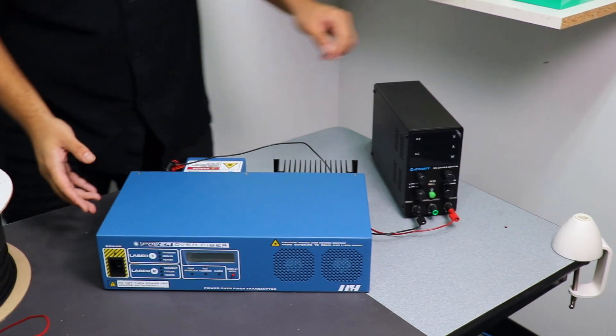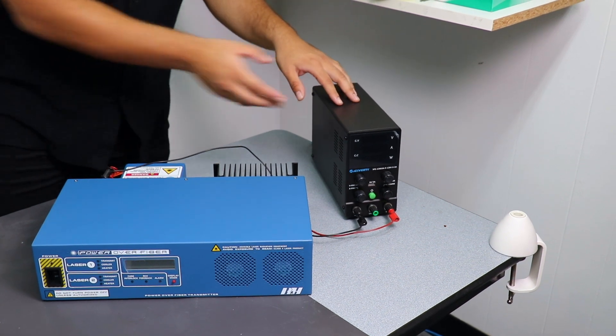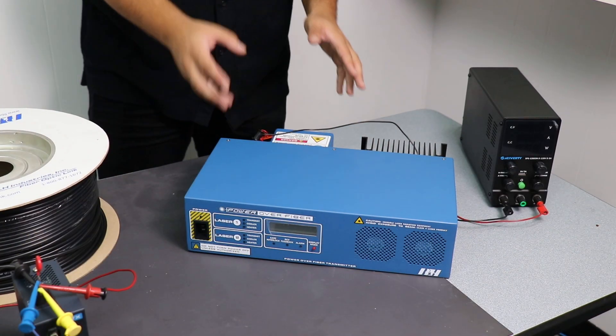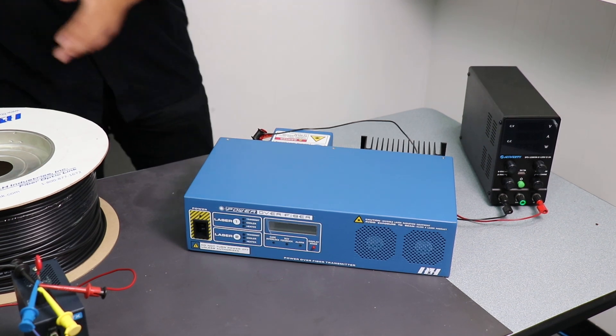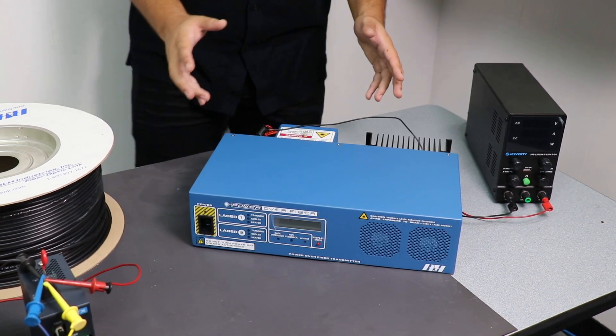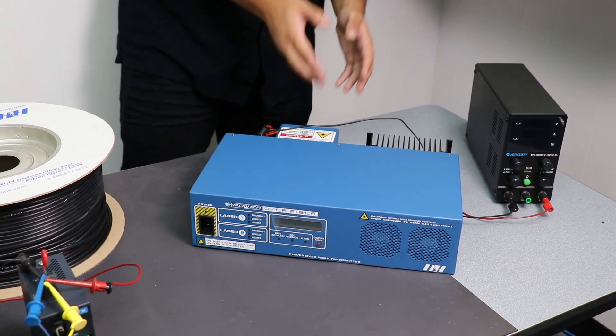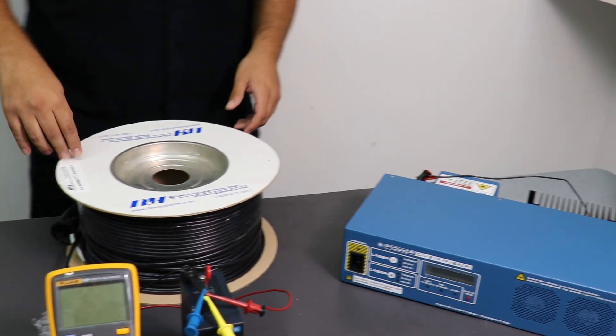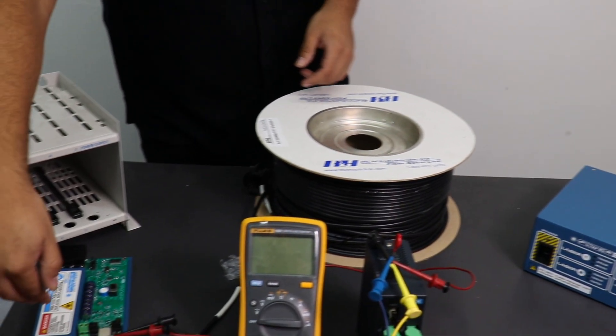All right, so over here, you have your DC power supply, which is connected to your transmitter unit. So you have to hook up all the fiber at first before turning it on. So over here, you have three fiber cables connected through a 500 feet cable and then connected to your receiver side.